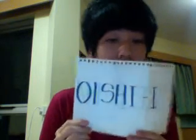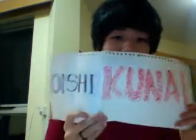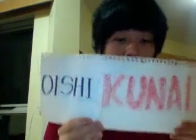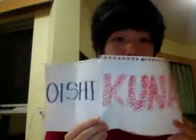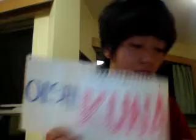The second one is the i-adjective. Oishii. So how are you going to make it into a negative form? You first omit ii and then add kunai. But in order to make it into a past negative, you omit ii — like oishikuna — and then you add kata. So it's like kunakatta.